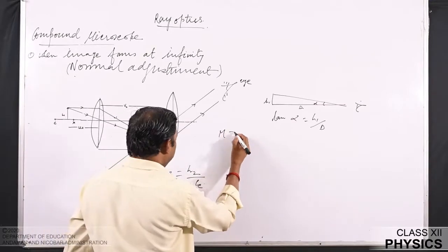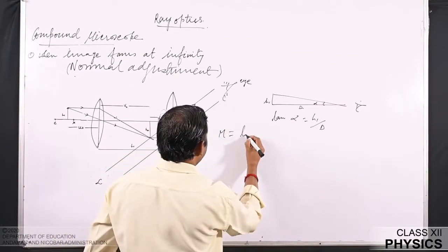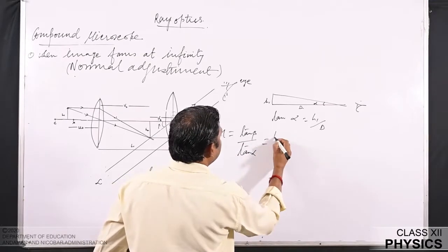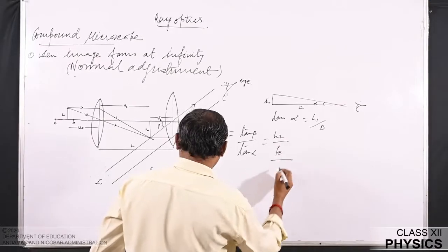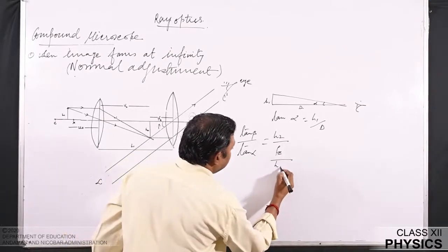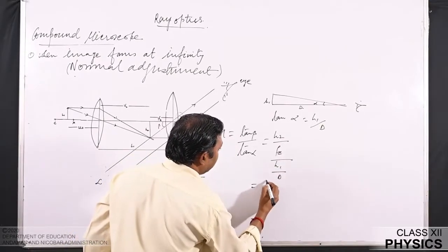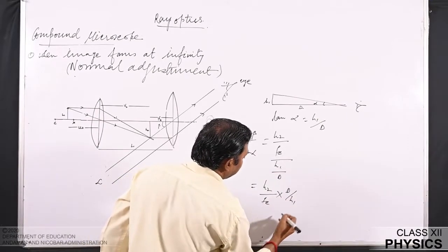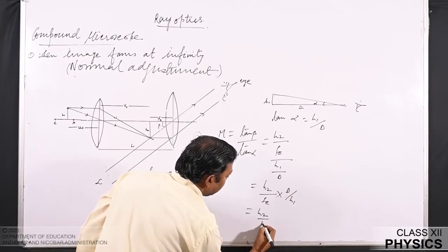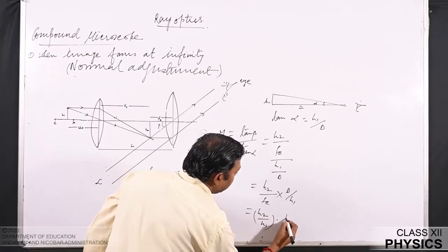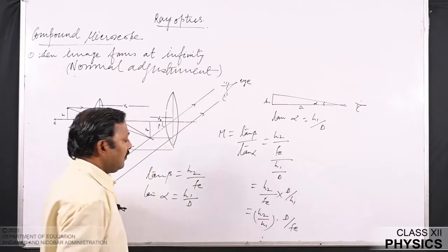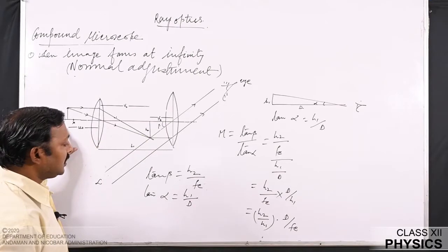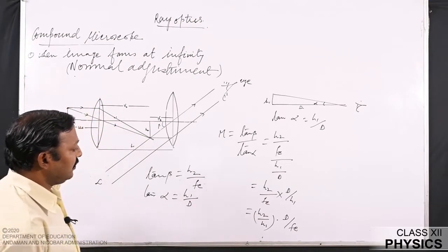The magnification m = tan β / tan α = (h2/fₑ) / (h1/d). This can be further written as (h2/fₑ) × (d/h1), or equivalently (h2/h1) × (d/fₑ). From the figure, h2/h1 is the magnification produced by the objective.